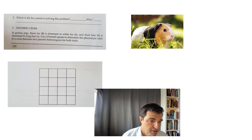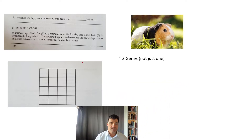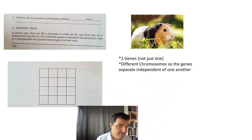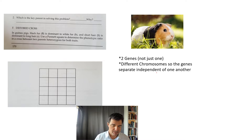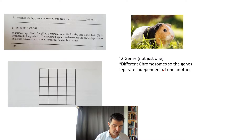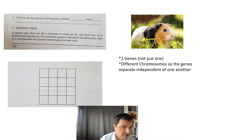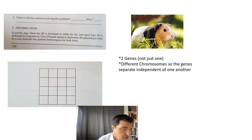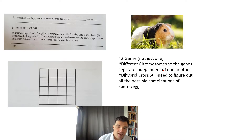To do that we need a different Punnett square — this bigger one with 16 boxes — because we're looking at two genes, not just one. We're also going to assume they're on different chromosomes, so the genes separate independently of one another. There are cases where genes are linked because they're on the same chromosome, but here we'll assume they're either far enough apart or on separate chromosomes to behave as if they separate independently.